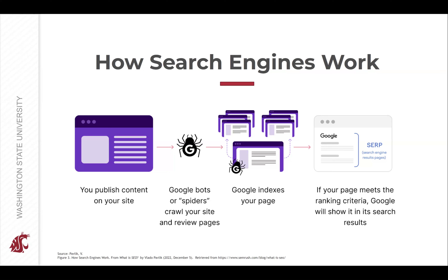Google uses a relatively complex process known as algorithms to rank pages. These algorithms take into account a huge number of ranking factors to decide whether a specific page should rank. You don't need to know exactly how search engine algorithms work — nobody knows with 100% certainty. But knowing the basics of what search engine algorithms are looking for can help you better understand how SEO works and what it takes to optimize your pages to rank in Google.